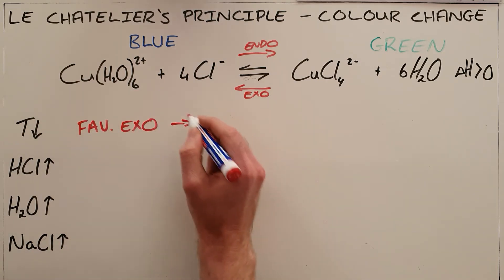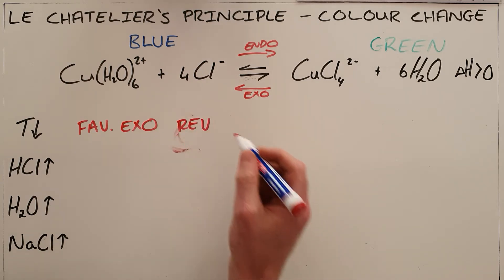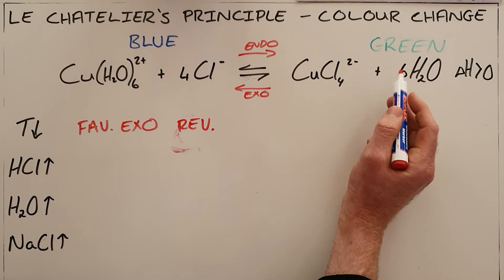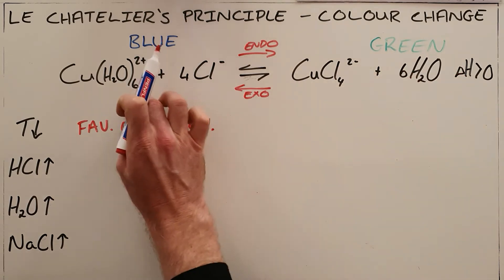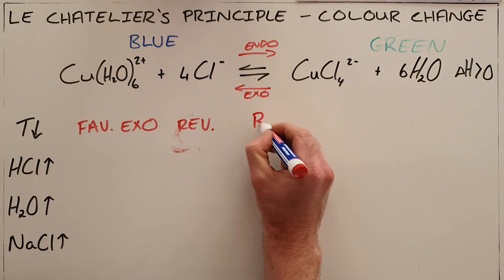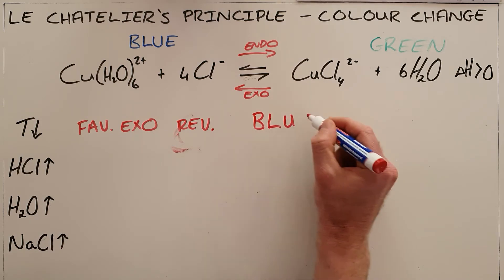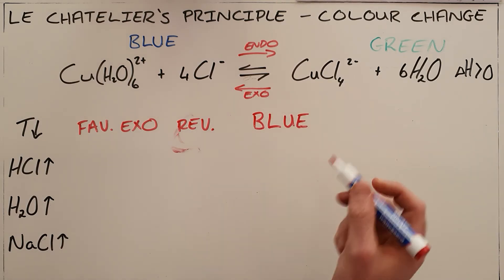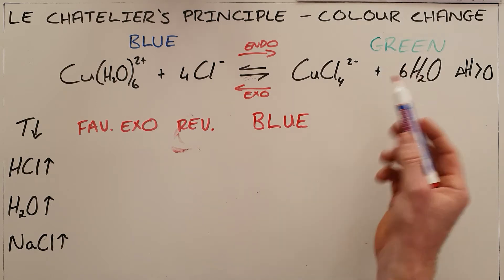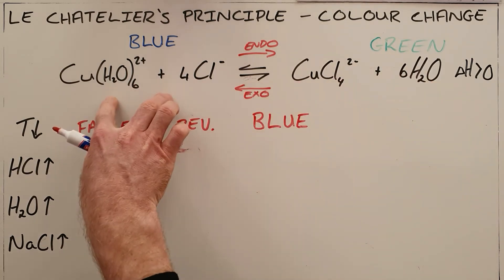Which in this case is also our reverse reaction. And we can see clearly that the reverse reaction uses up green to produce blue. So we can say that the color change when decreasing the temperature is that this reaction becomes more blue because it uses up green to produce blue.